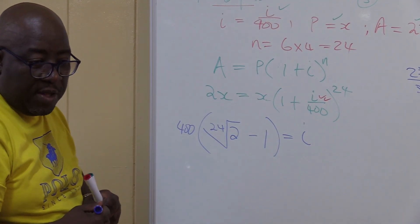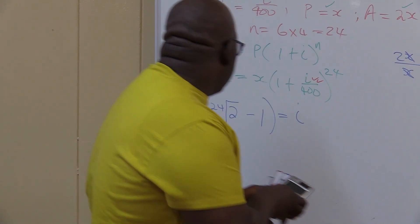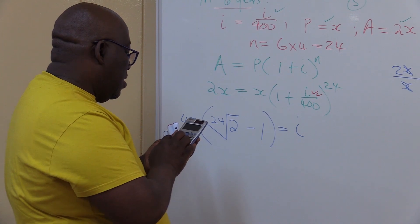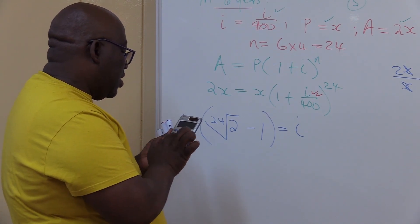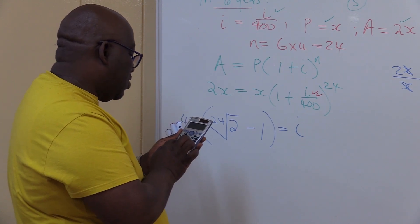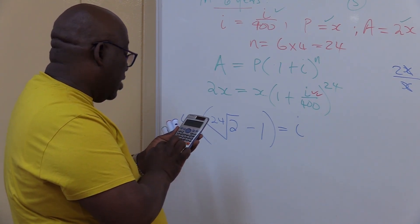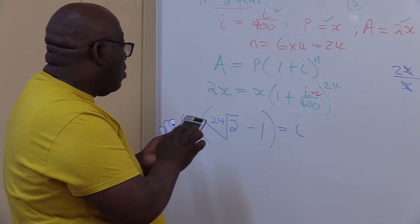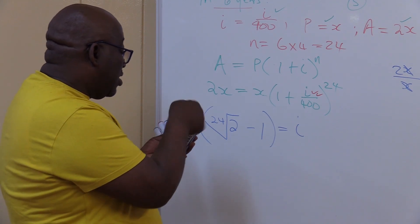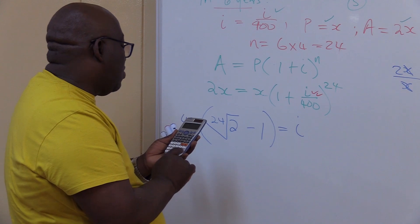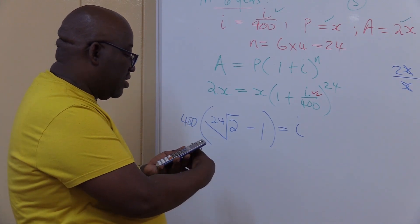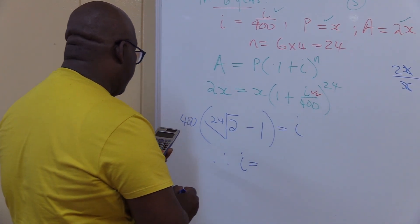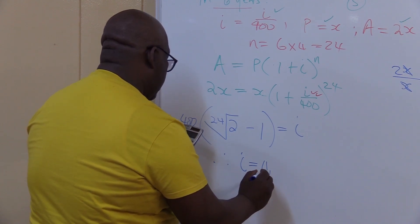The next step is calculator work. Let's quickly do it. I've got 400 times root - this is 24th root - of 2, minus one. I close the bracket. I push my equal sign. It's 11.72. So therefore, my i in this particular problem is 11.72.